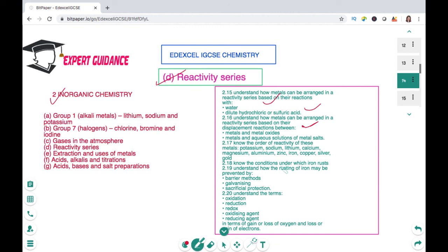In this unit we'll also discuss the rusting of iron and the various ways in which we can prevent the rusting of iron, and how we can define oxidation and reduction in terms of gain and loss of oxygen or gain and loss of electrons.